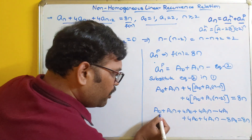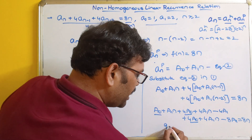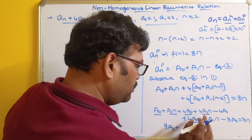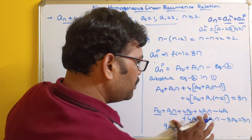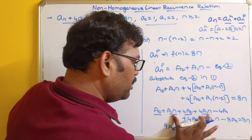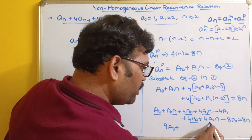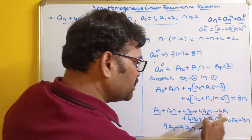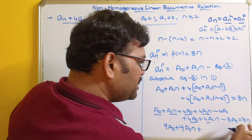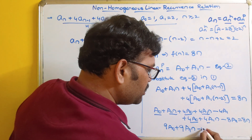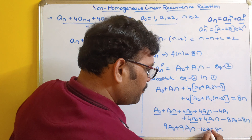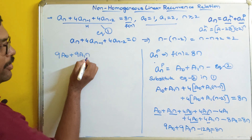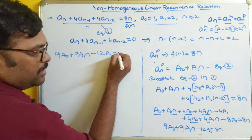Collecting terms: a₀ + 4a₀ + 4a₀ = 9a₀, and for the n-terms: a₁ + 4a₁ + 4a₁ = 9a₁. For the constants: -4a₁ - 8a₁ = -12a₁. So we get: 9a₀ + 9a₁·n - 12a₁ = 8n.